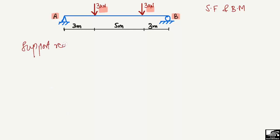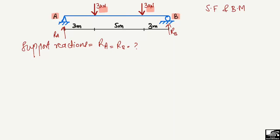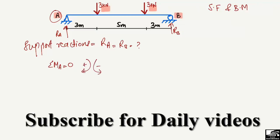To start, the two support reactions are RA and RB. We will use the equilibrium equation — summation of moments at any point equal to zero. Let's take the summation of moments at point A equal to zero. We assume that clockwise moment is taken as positive and counterclockwise moment is taken as negative.